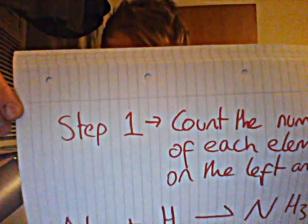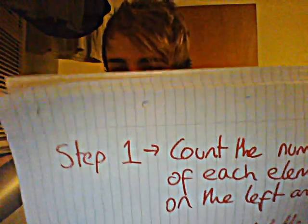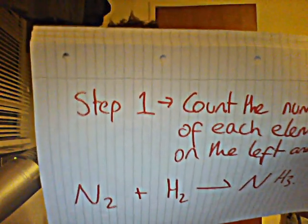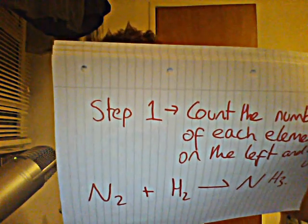Step number one: we must always count the number of each element on the left and on the right first. So step number one — count the number of each element on the left side and the right side. Take a moment and try to count the number of nitrogens and hydrogens on the left, then count them on the right.